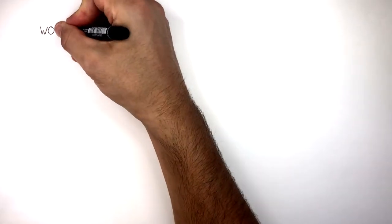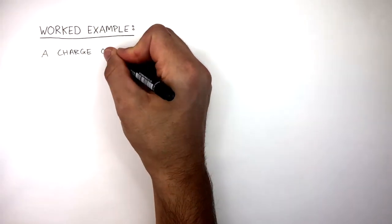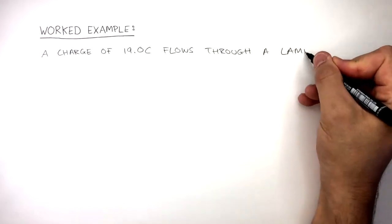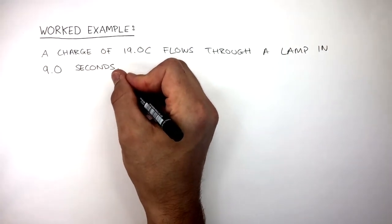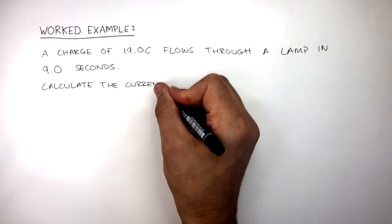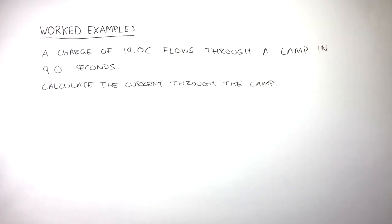Let's go through a worked example to practice using this equation. In your exam you could be given information such as: A charge of 19 Coulombs flows through a lamp in 9 seconds. You could then be asked to calculate the current through the lamp.